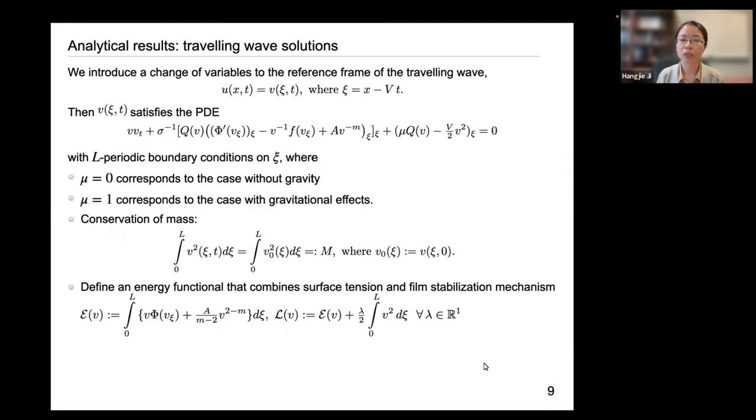In addition to the existence and non-negativity results, we also study the traveling wave solutions. Here, we introduce a change of variables so that we can consider the PDE in the moving reference frame. After introducing this change of variable with a constant velocity big V, we get a PDE for the small v that satisfies the PDE in the moving reference frame.